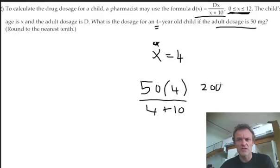200 divided by 14. And if you round that to one decimal place, that's 14.3. Is that in milligrams? Okay, so if the adult dosage is 50, the child's is 14.3 milligrams. There's just a couple of word problems, but it's not too bad. You're just throwing numbers into the equation.